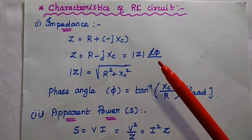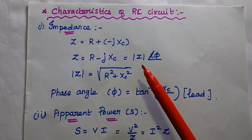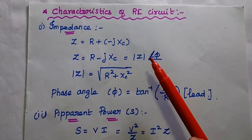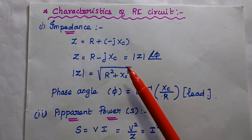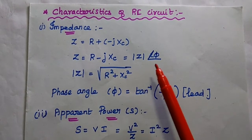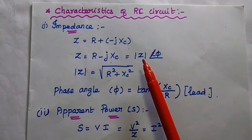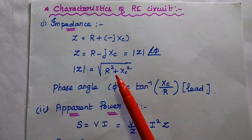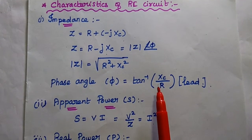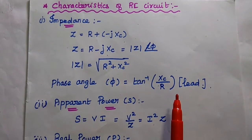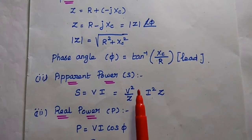Next, the characteristics of the RC series circuit. The impedance Z = R − jXc, since the capacitor has negative reactance. In polar form, the magnitude is √(R² + Xc²) and the phase angle is tan⁻¹(Xc/R), which is a leading phase angle. The current leads the voltage by the phase angle phi — we say the phase angle is a leading one.